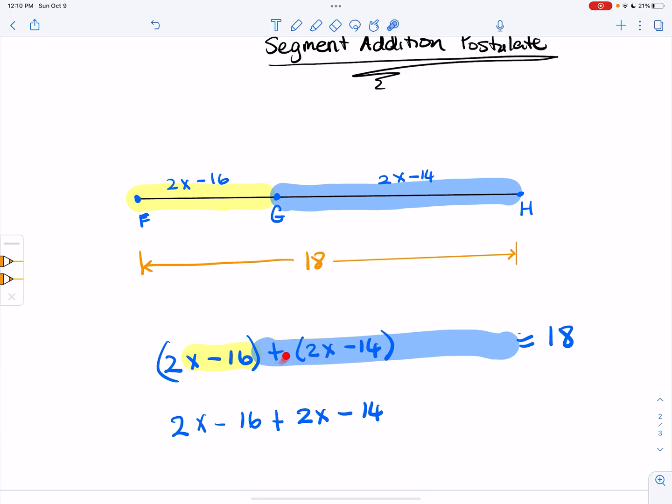So if we had a minus sign here, it would have changed these, but again this is the segment addition postulate. So actually none of these signs end up changing. And then we end up getting 18.